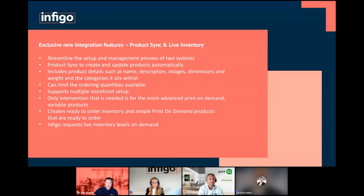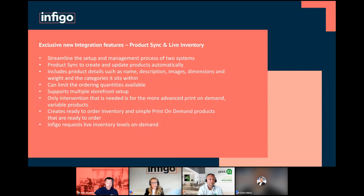The information shared between the two systems includes things like product name, description, weight, dimensions — all the things required for calculating shipping in the front end. Product imagery to make it look smart, and even the category structure. So if you've created a category hierarchy in PrintIQ, we'll mimic that in the storefront shopping experience for customers. If you've got product restrictions around quantities, we'll also replicate that in Infigo. All of these products are then created, mapped to PrintIQ SKUs, and can be ordered without any other manual intervention.